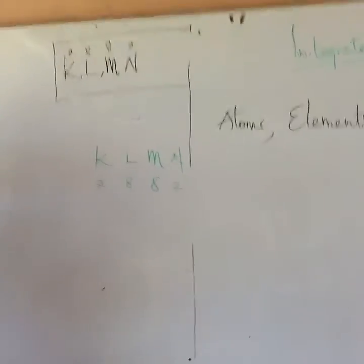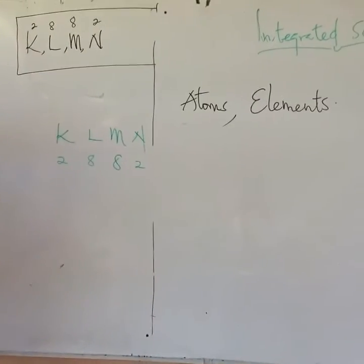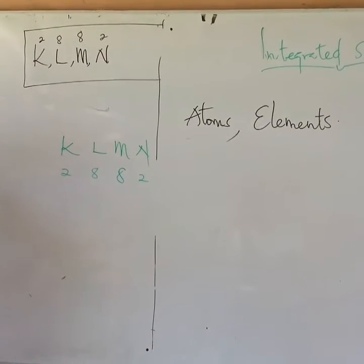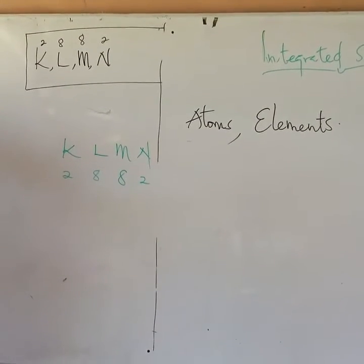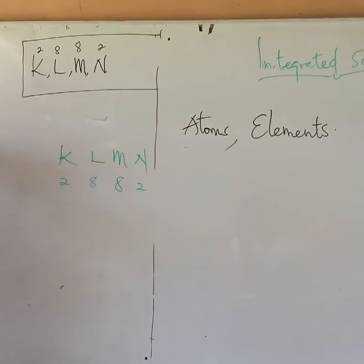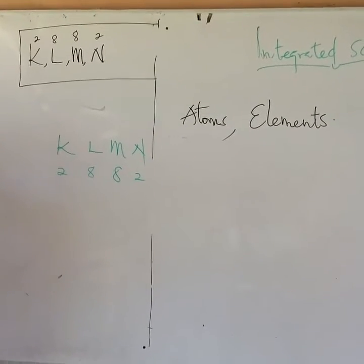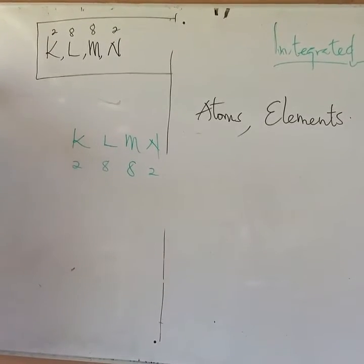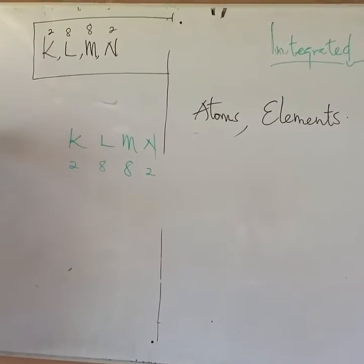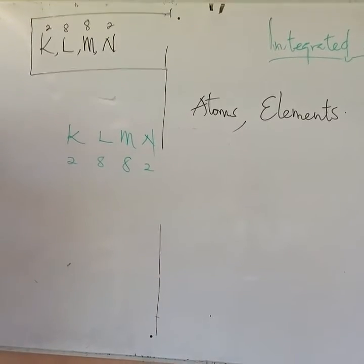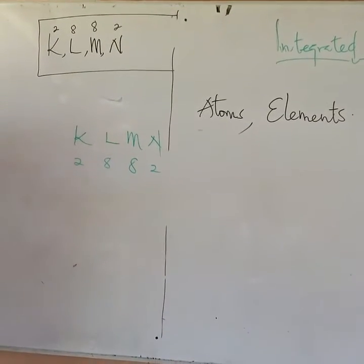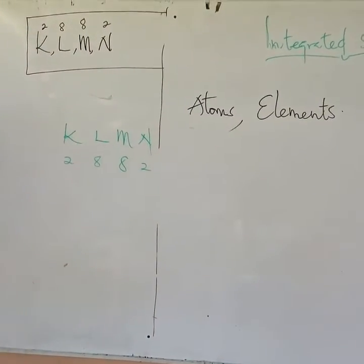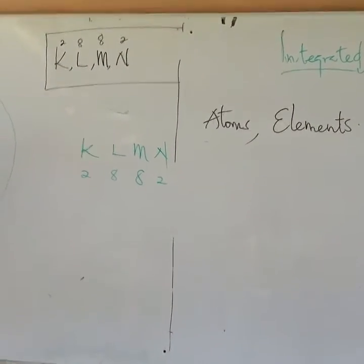So we have the nucleus there with protons and neutrons inside. The first shell, K, should take 2. The next shell, L: 1, 2, 3, 4, 5, 6, 7, 8. Then the next one, M: 1, 2, 3, 4, 5, 6, 7, 8. And the last one, the N shell, takes 2. This is the electronic configuration of calcium.